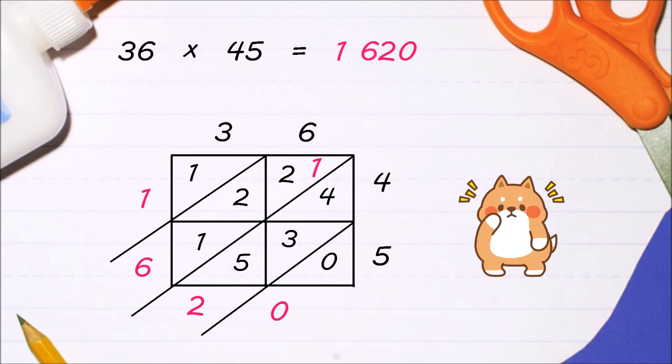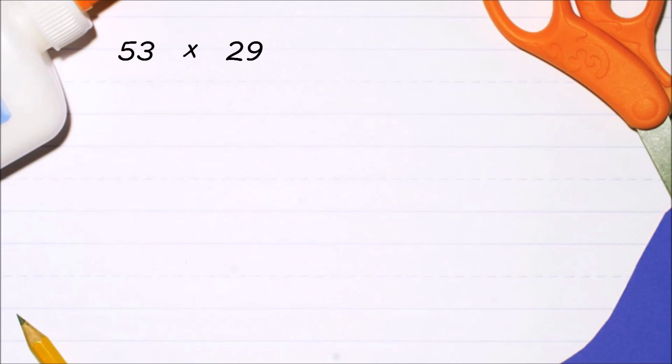Let's have another example. 53 times 29. Again, we will just follow what we did a while ago.